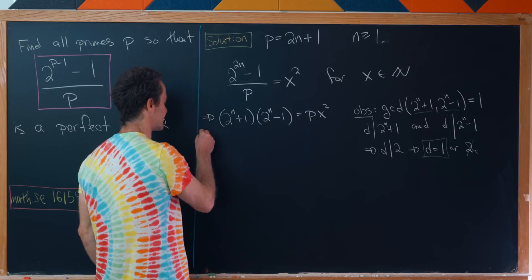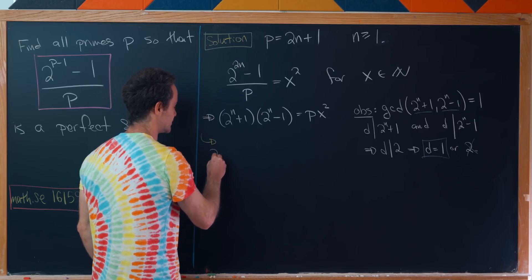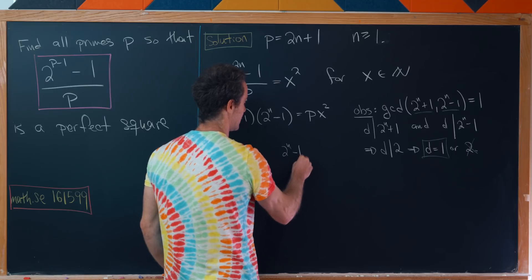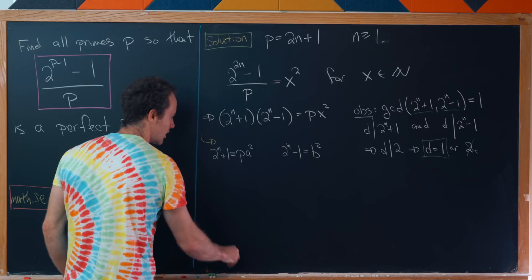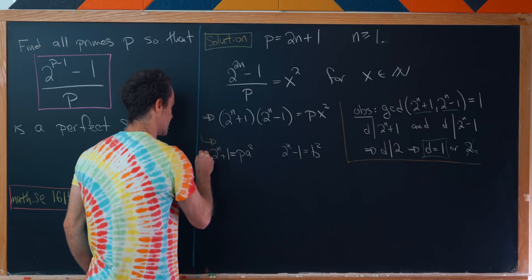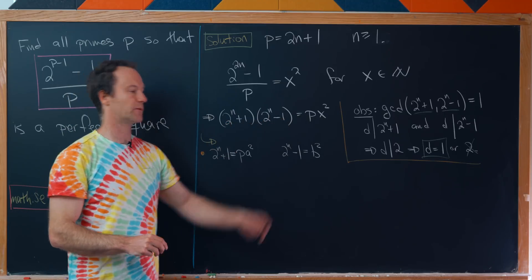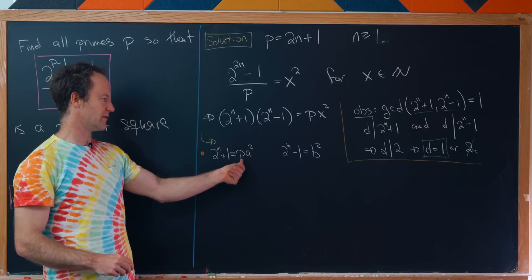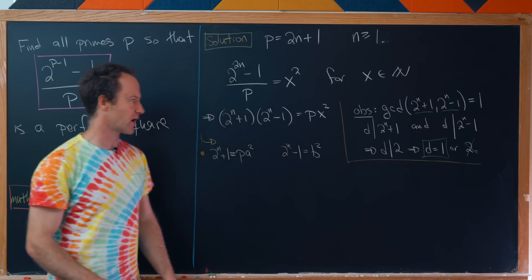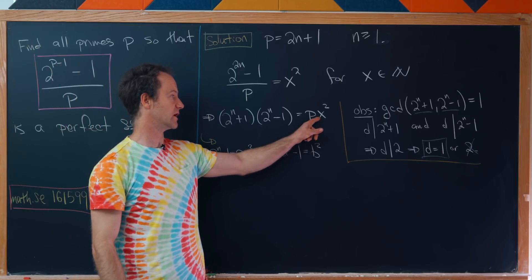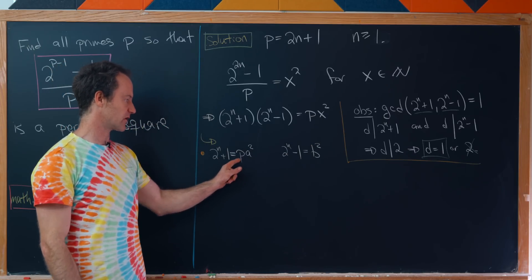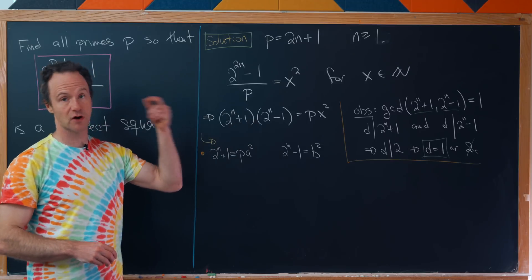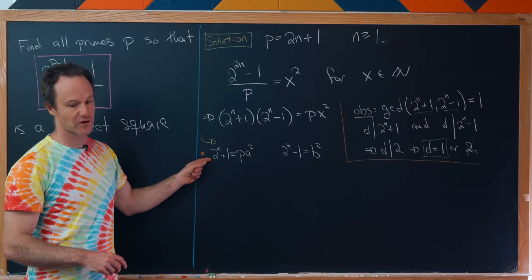What does that mean? That's going to break us into two different cases. Case 1: 2^n + 1 equals p times a^2 and 2^n - 1 equals b^2. We've got this product of things equal to a prime times a perfect square. The prime has to be inside one of them as a factor. Since these are relatively prime and what's left over is a perfect square, then what's left after the distribution of p must be a perfect square in both cases.